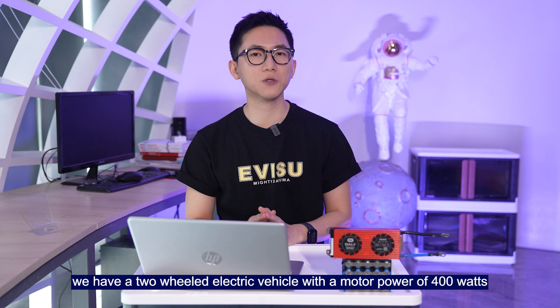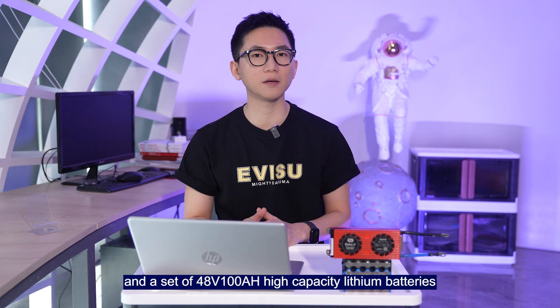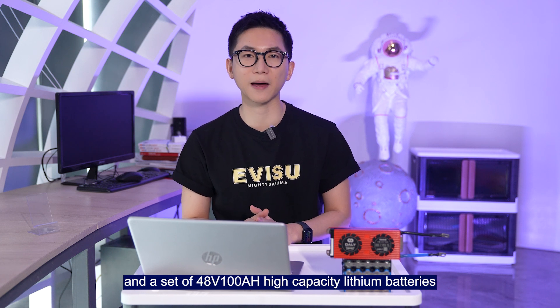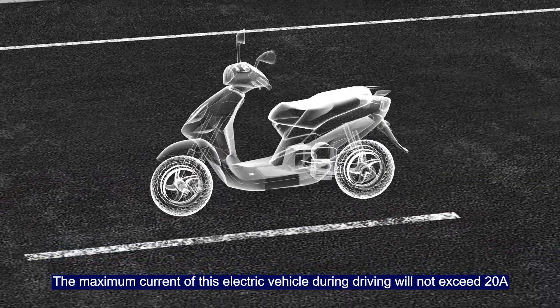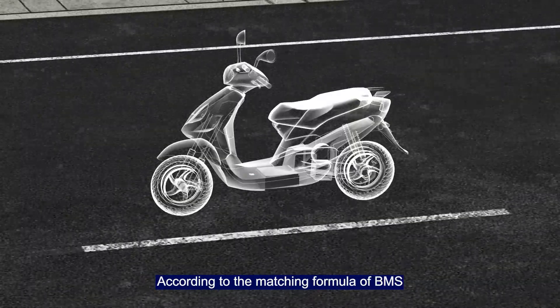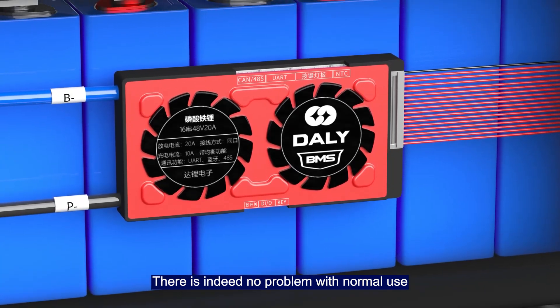Here's an example. We have a two-wheeled electric vehicle with a motor power of 400W and a set of 48V, 100Ah high-capacity lithium batteries. The maximum current of this electric vehicle during driving will not exceed 20A. According to the matching formula of a BMS, a 20A BMS is sufficient. There's indeed no problem with normal use.